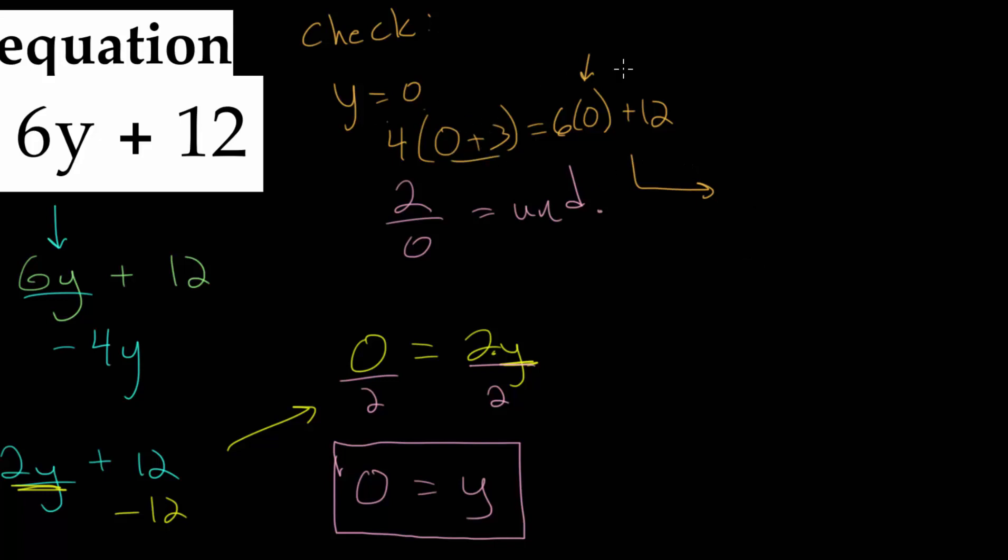We can simplify everything. 0 plus 3 is just 3, so we have 4 multiplied by 3. Here we have 6 times 0, which is 0, and we have plus 12. So 0 plus 12 is just 12. And 4 times 3 is 12. This does make sense, which helps us confirm that y is indeed equal to 0.